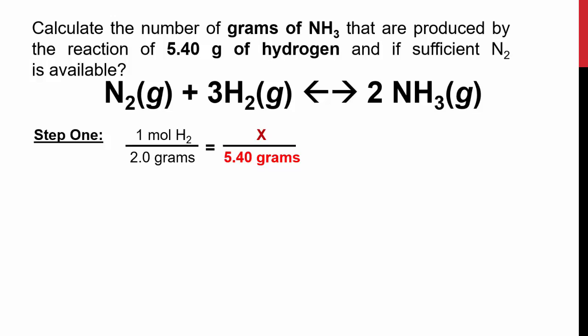So our first step is to convert 5.40 grams of hydrogen into the moles of hydrogen. We know that in one mole of H2, we have 2.0 grams of H2. In the problem though, we have 5.40 grams, which means we should have more than one mole. Cross multiply, we end up with 2.7 moles of H2. Now that we have the moles of hydrogen gas, we can use stoichiometry to convert from hydrogen to ammonia.